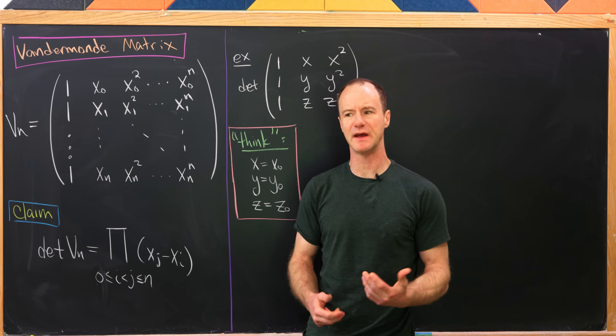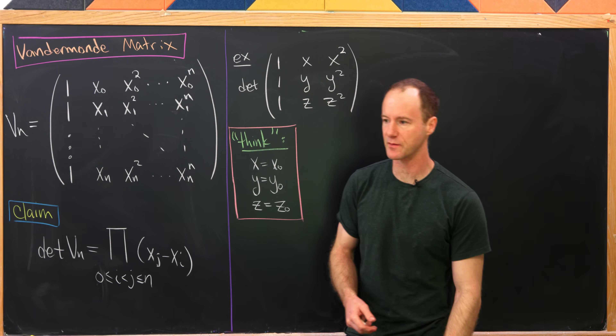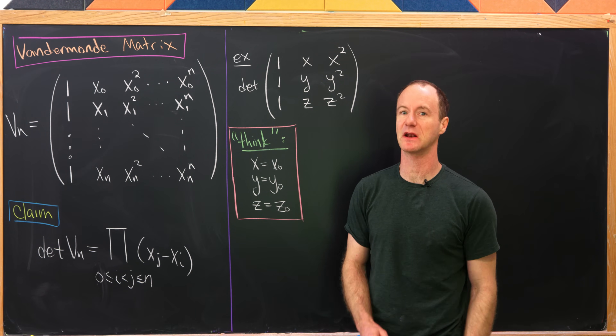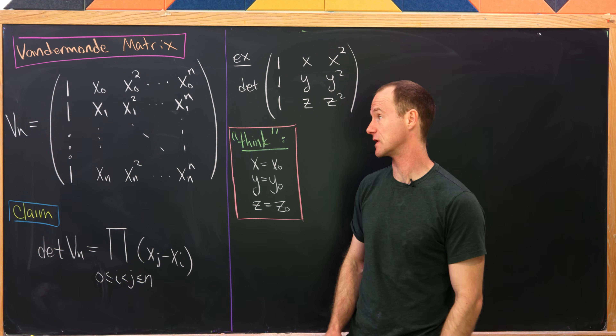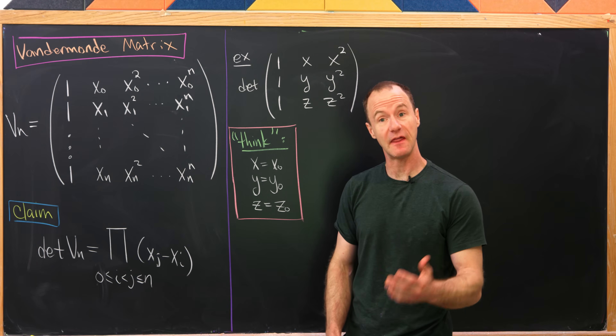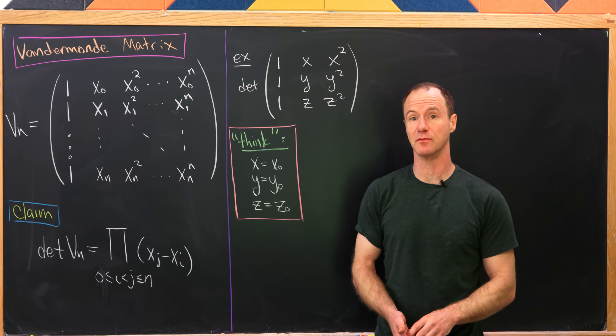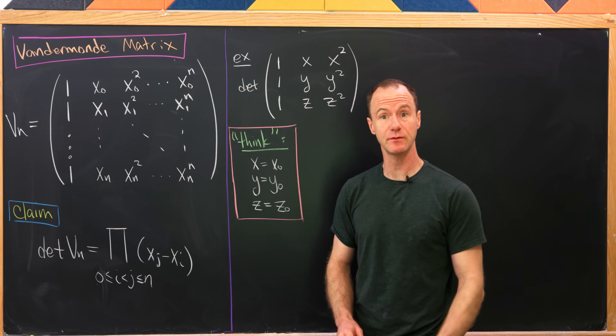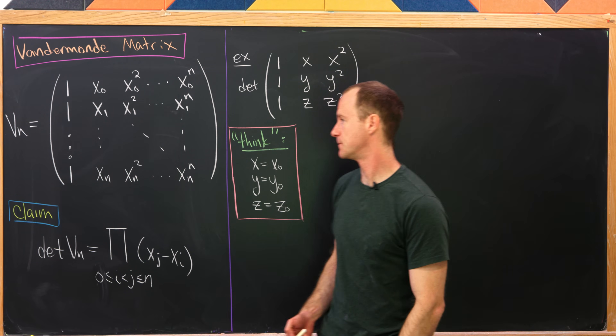Today we're going to look at a certain matrix that you learn about in linear algebra that shows up in a lot of different places. And that is the Vandermonde matrix. So let's see what it looks like.